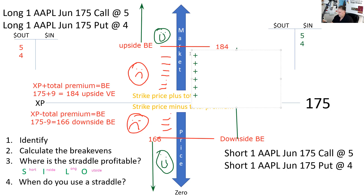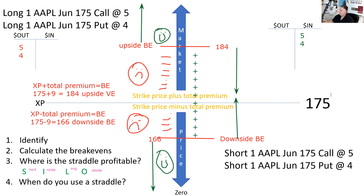We've identified it as a straddle and calculated the break-evens. Note: the break-evens are the same — you total the premiums, add to the call strike price, subtract from the put strike price. For profitability using SILO — short inside, long outside — since it's a short straddle, we want Apple to be in between the two numbers, between 166 and 184. Outside those two break-evens is where it's unprofitable.